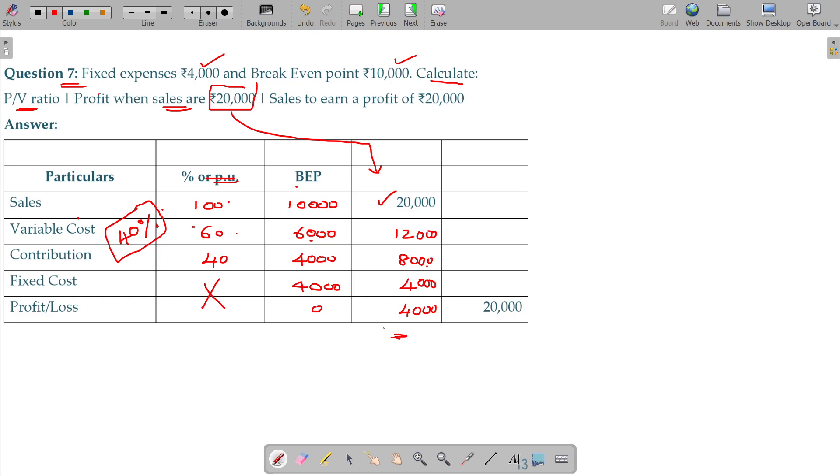Margin of safety. Sales beyond BP. Beyond BP, fixed costs absorb. Balance of the contribution profit. Margin of profit. And profit in the sales, you will get fixed cost. Fixed cost subtracted profit. Is that okay?